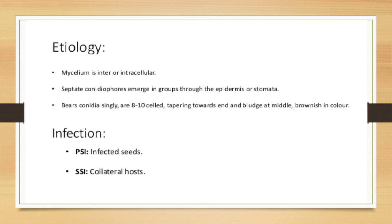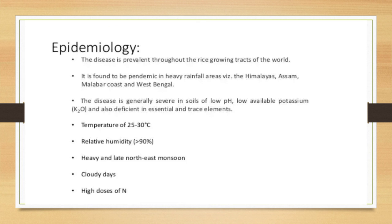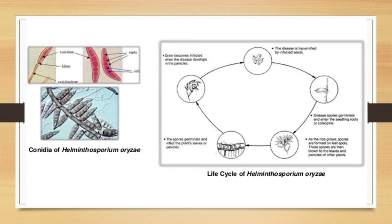The primary source of infection is infected seeds — this is why using healthy, disease-free seeds is strongly recommended. Secondary spread occurs via collateral hosts; avoid collateral hosts adjacent to the field. The disease is pandemic and prevalent throughout the world's rice-growing areas, particularly in heavy rainfall areas such as the Himalayas, Assam, Malabar Coast, and West Bengal. It is generally severe in soils of low pH, low available potassium, and deficiency in essential and trace elements. Favorable conditions include temperatures of 25–30°C, relative humidity above 90%, heavy northeast monsoon, cloudy days, and high nitrogen doses.